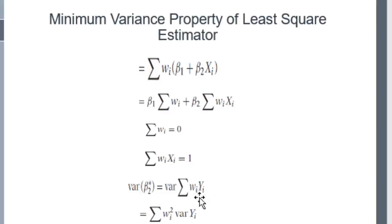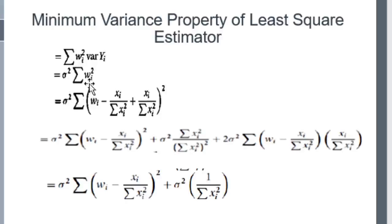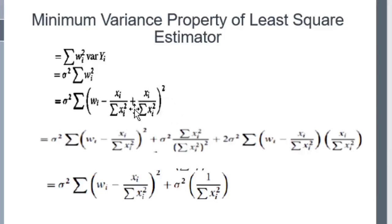Now for the variance: Var(beta2-star) = Var(sigma(wi*yi)) = sigma(wi²) * Var(yi) = sigma² * sigma(wi²). This can be rewritten as sigma² * summation of (wi - xi/sigma(xi²) + xi/sigma(xi²))², where one term is added and the other subtracted — the value remains the same. This is a mathematical trick.